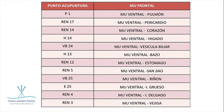El punto Mu anterior lo encuentro con respecto a estos puntos. La mayoría viene sobre el meridiano Ren Mai, que arranca desde la zona del periné y va ascendiendo sobre la línea anterior del cuerpo, la línea más medial y anterior. La mayoría de puntos está sobre el meridiano Ren Mai, pero hay otros que corresponden a otros meridianos. Por ejemplo, Hígado 13 es punto mu ventral de Vaso, e Hígado 14 es punto mu ventral de hígado. Son 12 en total.